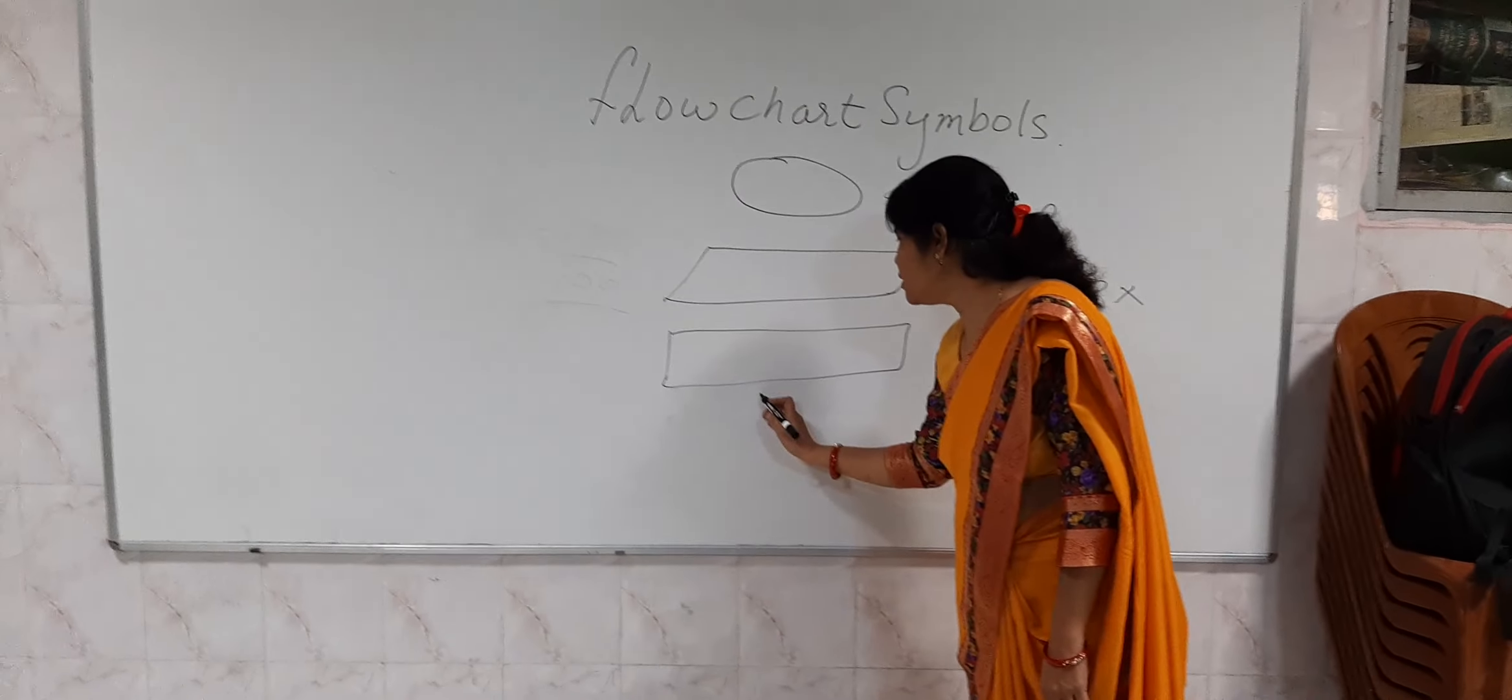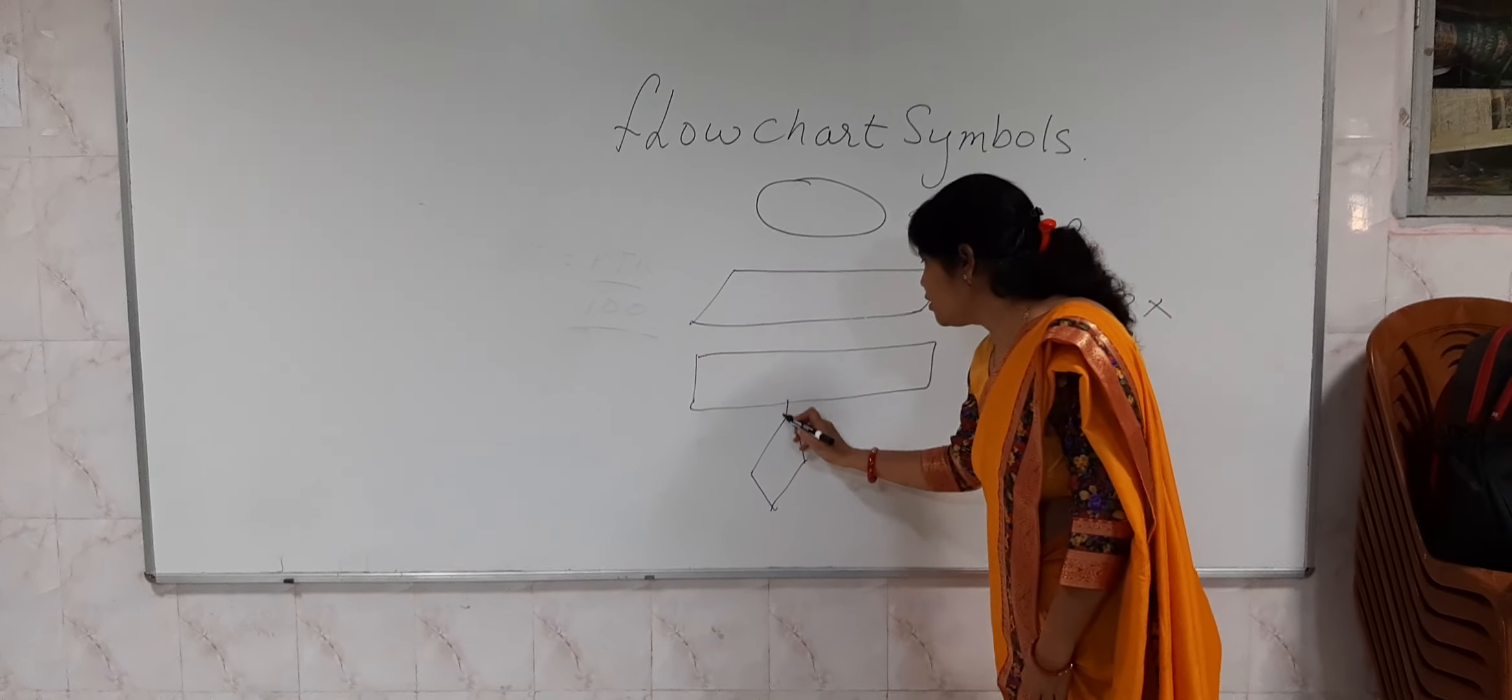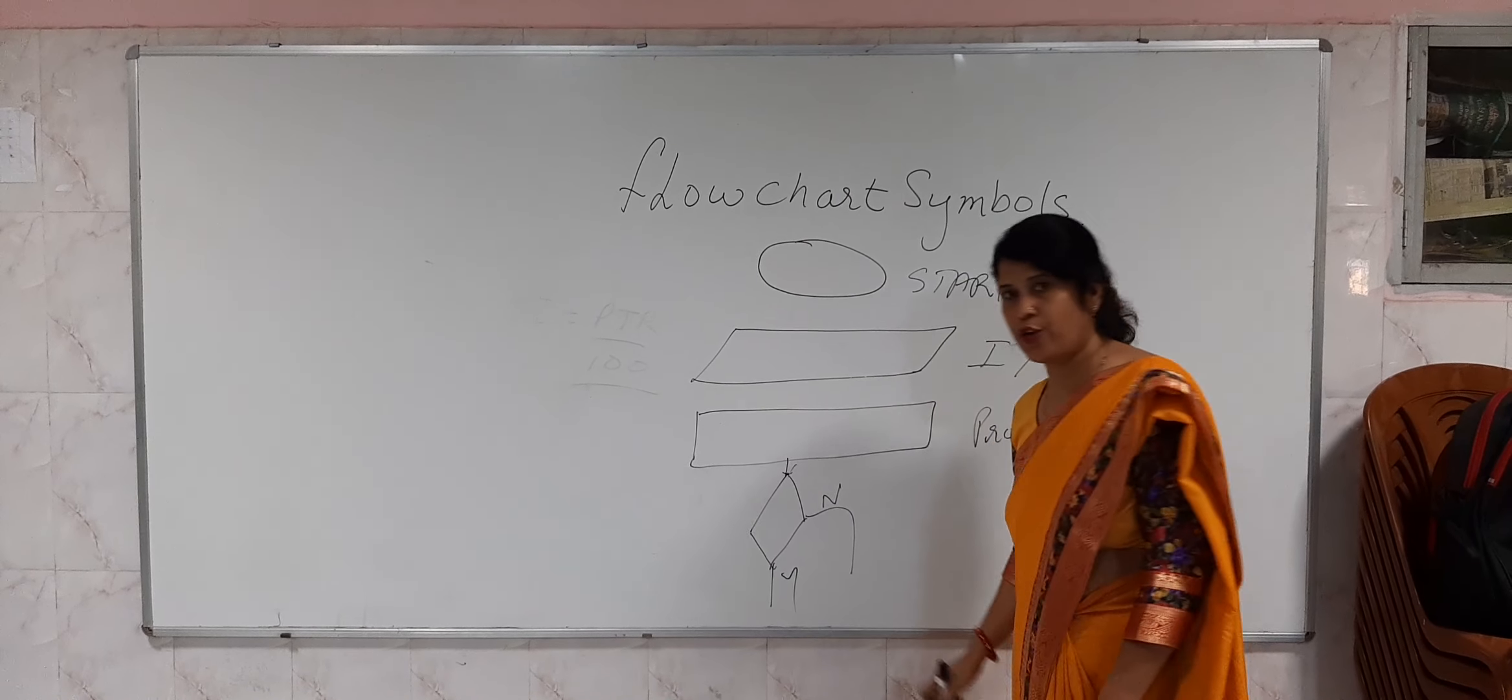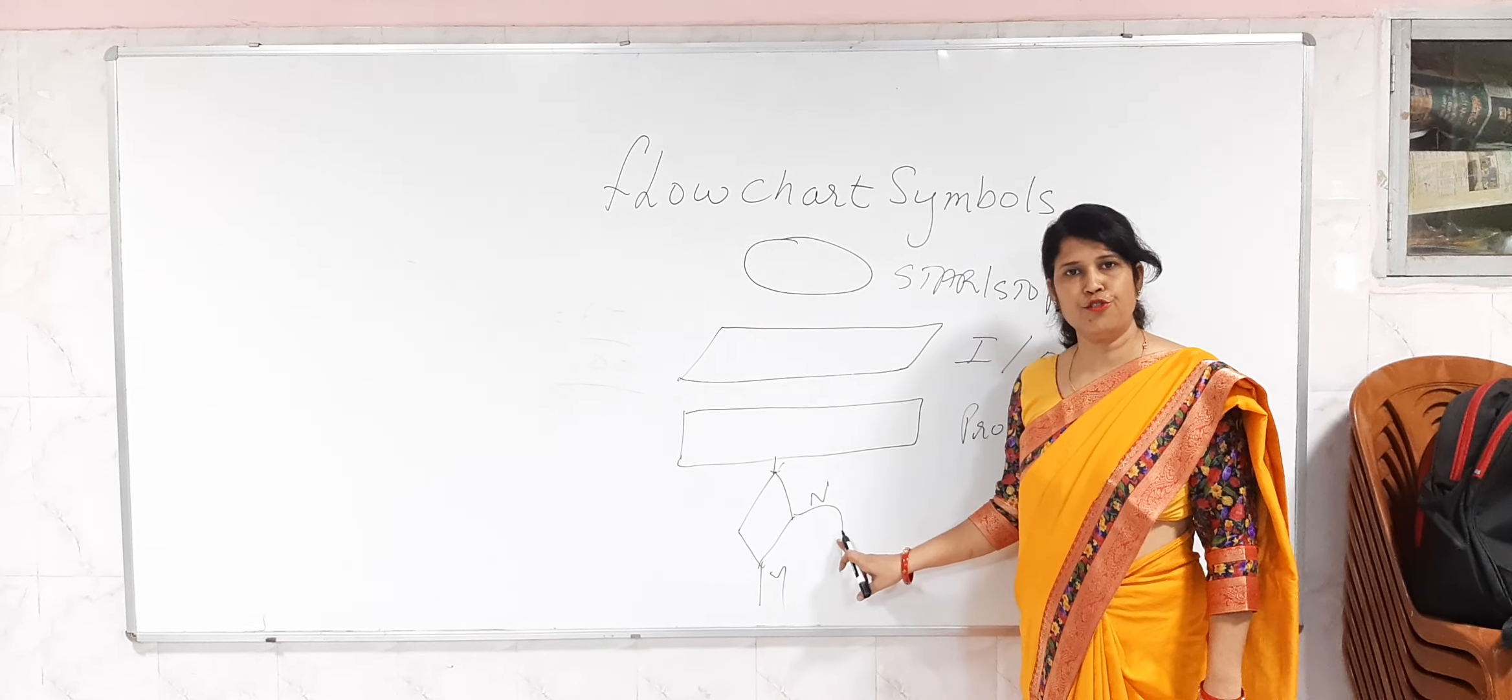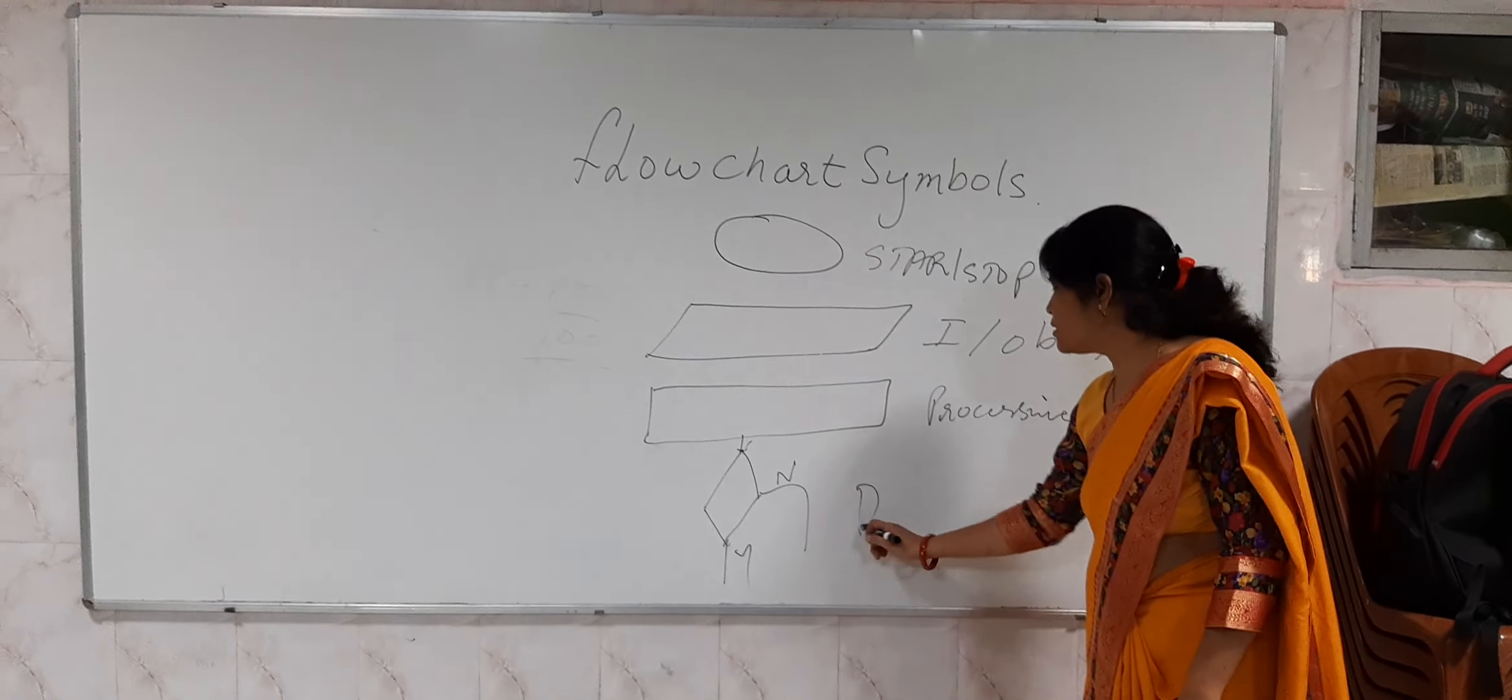Then we have another symbol, the decision box, which is rhombus in shape. Two flow lines come out of it, one for no and one for yes. If the condition is true, it goes to yes. If the condition is false, it goes to no. This is our decision box.